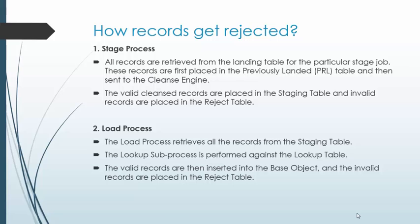During the load process, all records are retrieved from the staging table. The load process applies the lookup process — it checks whether the lookups are correctly working or not. If lookups are failing, the records need to be rejected because lookups are not properly working for those given records. Those rejected records will be inserted into the reject table. The name of the reject table is the name of the staging table appended with underscore REJ. These are the two processes during which records get rejected.